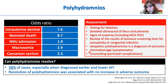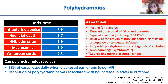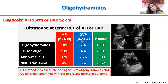An important question: can polyhydramnios resolve? The answer is yes — in about 30–40% of cases, particularly if it was an early diagnosis and if it was low AFI (mild polyhydramnios). If it does resolve, there is no increase in the risk of adverse outcomes.